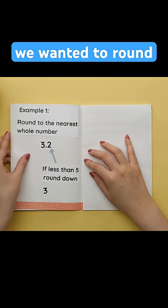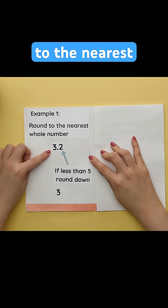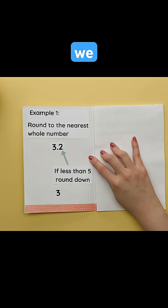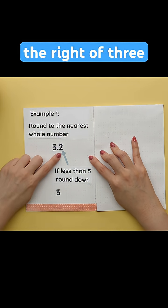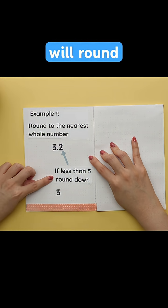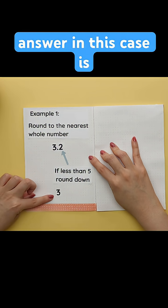For example, if we wanted to round 3.2 to the nearest whole number, and note a whole number has no decimals, we would start with looking at the number to the right of 3, which is 2. If this number is less than 5, we will round down. Our answer in this case is 3.